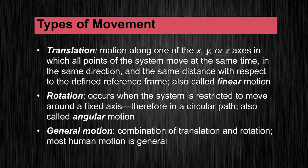Here are some types of movement. Translation is movement along one of the three axes — X, Y, or Z — in which all points of the system move at the same time. Think about a cyclist coasting down a hill; they're translating in the X axis because the X axis tends to be straight ahead for our systems. Rotation occurs when the system is restricted to move around a single fixed axis, in a circular path — this is also called angular motion. Think of a diver doing a triple front flip; if we could fix that diver in space and keep them spinning, that would be rotation. General motion is a combination of both translation and rotation, and that's what most human movement tends to be.